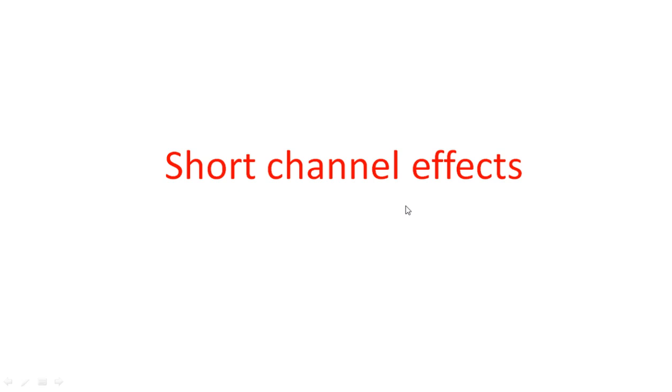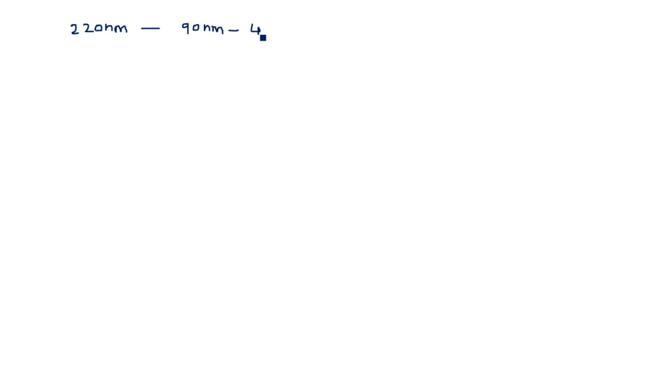In this video you are going to learn about various effects that need to be considered when we are going for short channel transistors. What do you mean by short channel and short channel effects? Short channel effects occur when we reduce the size of the transistor. In large different FPGA families, technology has been growing every year — from 220 nanometer to 90 nanometer to 45 nanometer, and nowadays we can see 6 and 7 nanometers.